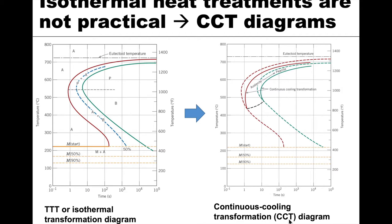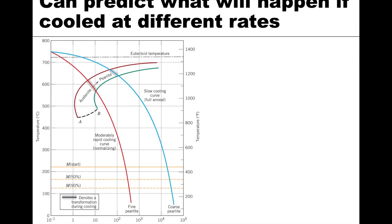We can transform our TTT, or isothermal transformation diagram, into a continuous cooling transformation, or CCT diagram, relatively easily. This diagram shows in dashed lines the isothermal lines, and the solid lines are the continuous cooling transformation diagram. Modifying the TTT gives us the CCT, which allows us to predict what will happen if we cool at different rates.